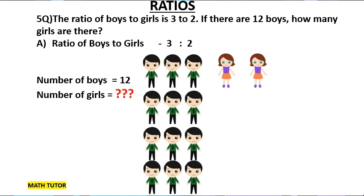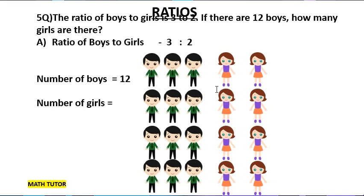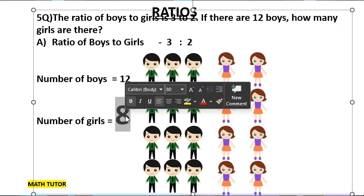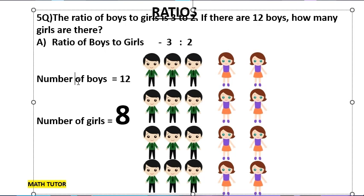So what is the answer? For every 3 boys there are 2 girls — we have 4 groups of 3 boys, so altogether there are 8 girls. If there are 12 boys, there are 8 girls. For ratios, you just need to visualize and do the problem. It is a very simple topic.